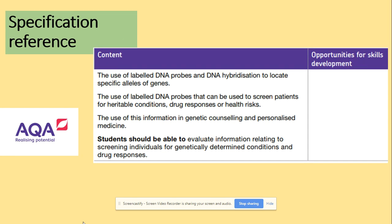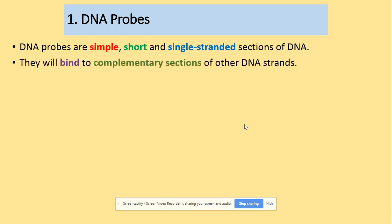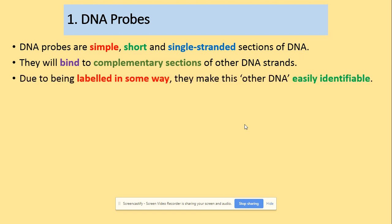In terms of the specification, the main aspect is to understand how DNA probes are working, and then using the information provided, you can evaluate their use in specific occasions. So what is a DNA probe? DNA probes are simple, short, and single-stranded sections of DNA. They will bind to complementary sections of other DNA strands and, due to being labelled in some way, they can be easily identified.